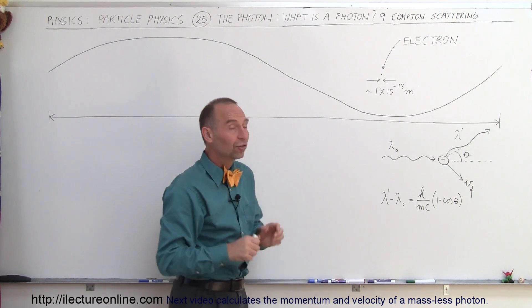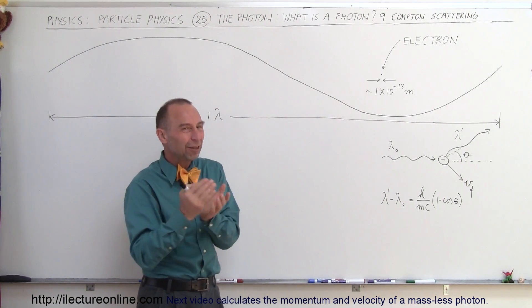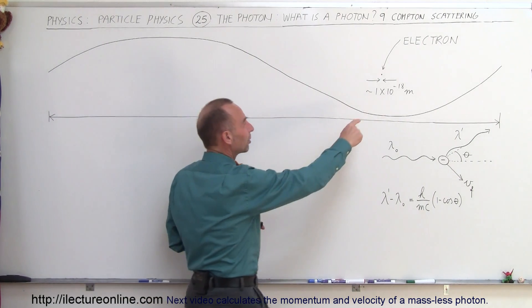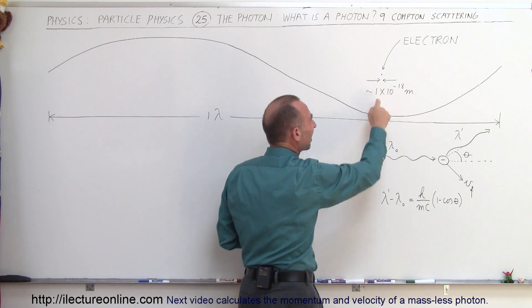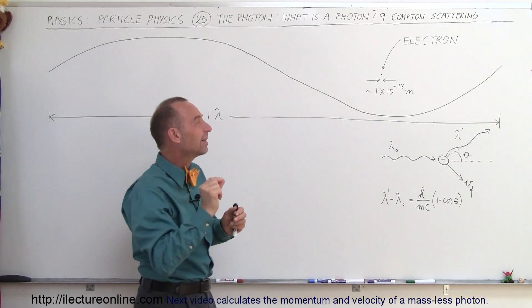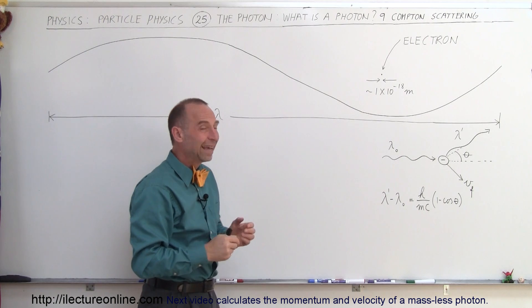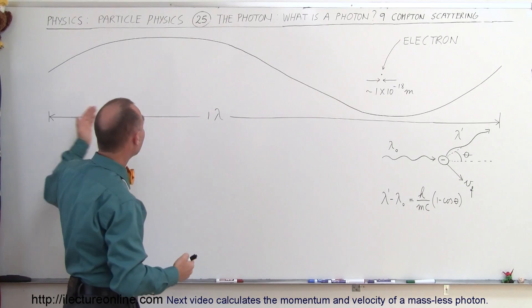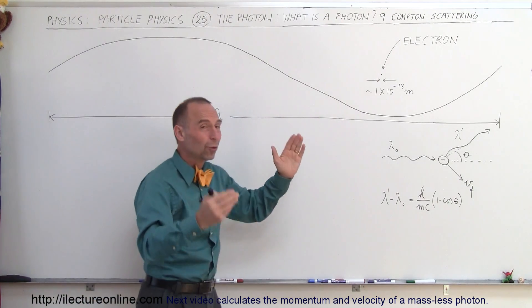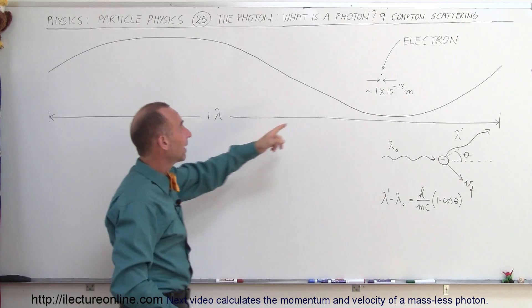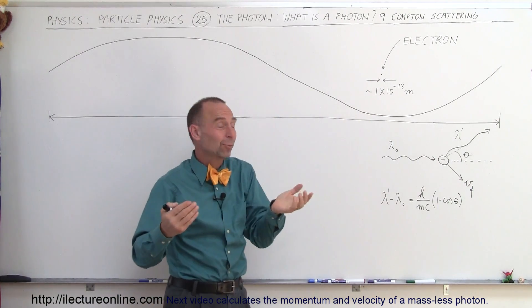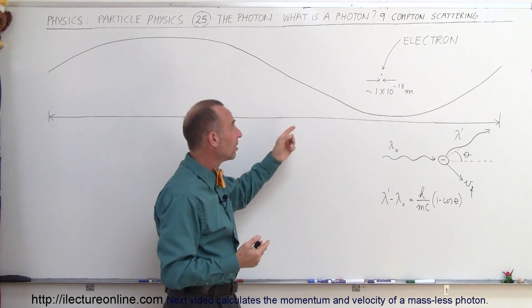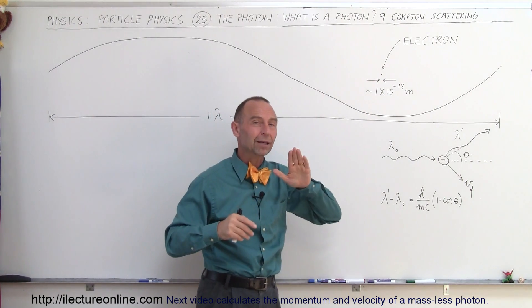This is a very interesting concept, especially when you start thinking about the difference between what a photon is and what an electron is. An electron is a very small point particle, roughly the size of 1 times 10 to the minus 18 meters — much smaller than the diameter of a nucleus. A photon, in comparison, even a very high energy photon like an x-ray or gamma ray photon, is huge in comparison. The wavelength of a photon is much greater than the size of an electron, so you might wonder how a photon — an energy particle, so to speak — can collide with an electron and be scattered by it.